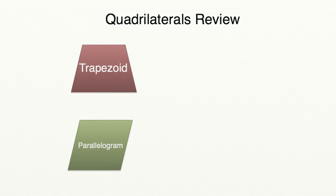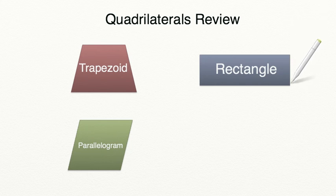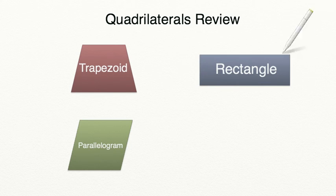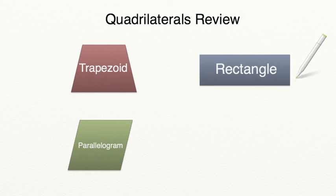That brings us to our next figure, a rectangle. A rectangle also has to have two sets of parallel sides, but it also has to have four 90-degree angles. A rectangle, however, does not need to have all four sides the same length. As you can see, our sides on the left and the right are much shorter than our sides on the top and the bottom. Our only requirements for a rectangle are to have four 90-degree angles and two sets of parallel sides.